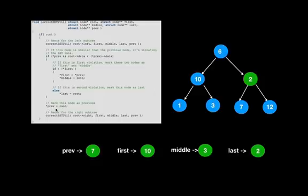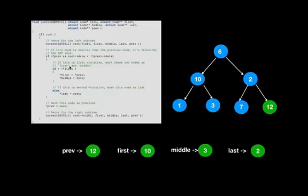Set previous to 2 and recur for the right subtree — go to 12. The left subtree of 12 does not exist. Previous is 2; root data 12 is not lesser than 2, so nothing. Update previous to 12 and recur for the right subtree, which also does not exist. We have now obtained the values of first, middle, and last: 10, 3, and 2 respectively.